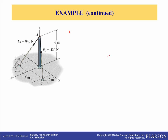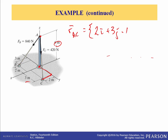So we want r_AC — we're on A looking at C, so the vector must go in that direction. By inspection: how far in the X direction? 2 meters — so r_AC has 2i. In the Y direction we go 3 meters, so plus 3J. Then from A we drop down to the XY plane, so Z is minus 6K. That's in meters. So now we have the position vector between A and C.